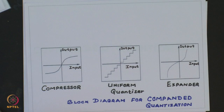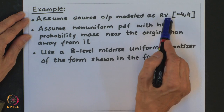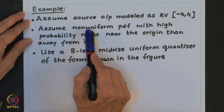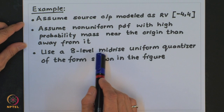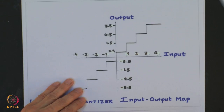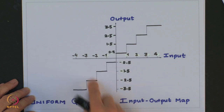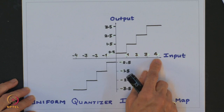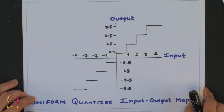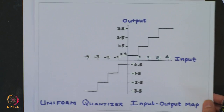To understand this, let us take a simple example. Assume a source output modeled as a random variable between minus 4 and plus 4, with a non-uniform PDF having high probability mass near the origin. For our discussion we will use an 8-level mid-rise uniform quantizer as shown in this figure — this is the uniform quantizer with its input-output mapping, quantizing inputs from minus 4 to plus 4 with equally spaced decision boundaries and reconstruction levels. Now let us try to flatten out the non-uniform PDF using the compressor and expander, together known as the compander.